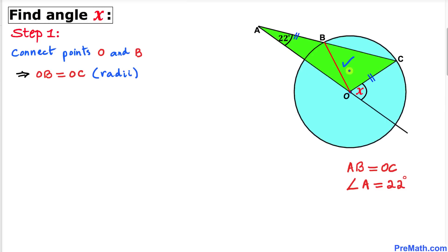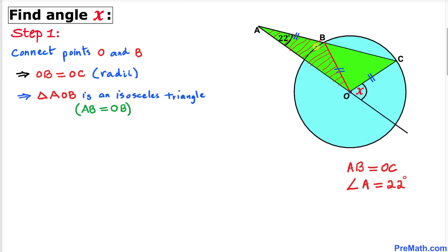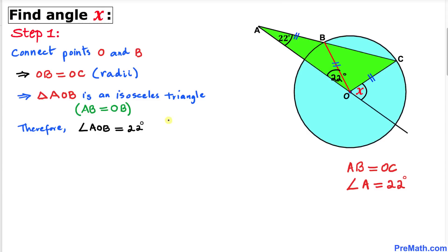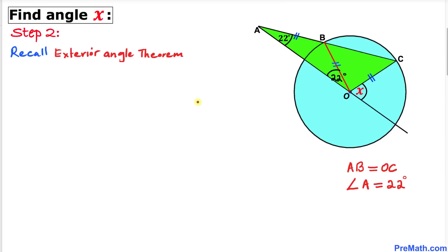We can see that OC is the radius of the circle and OB is a radius as well, so these two radii are equal in length. Focusing on triangle AOB, we can see it is an isosceles triangle since side length AB equals side length OB. Therefore, both base angles are equal — since angle A is 22 degrees, the other base angle is 22 degrees as well, making angle AOB equal to 22 degrees.